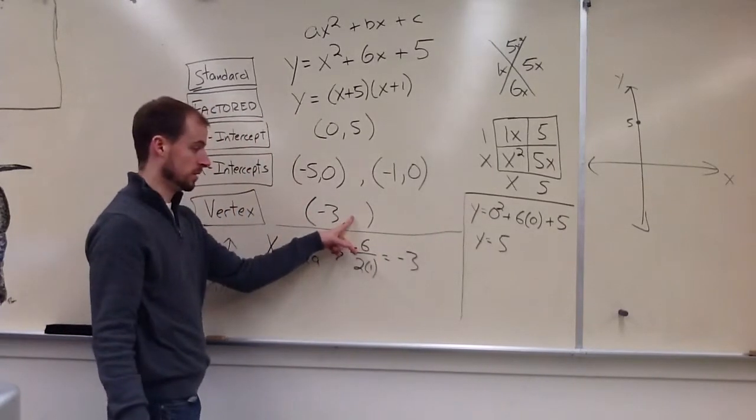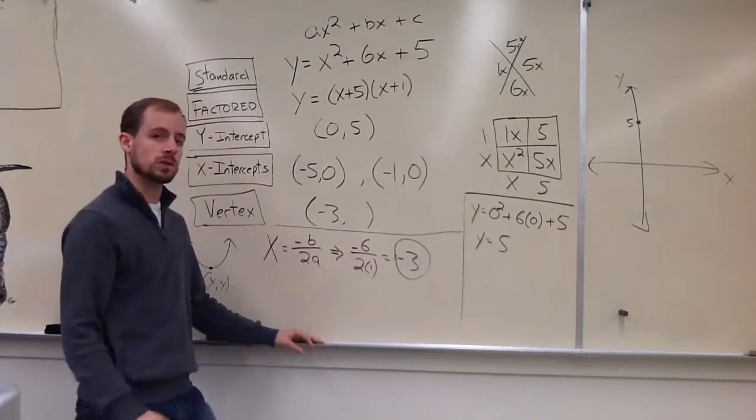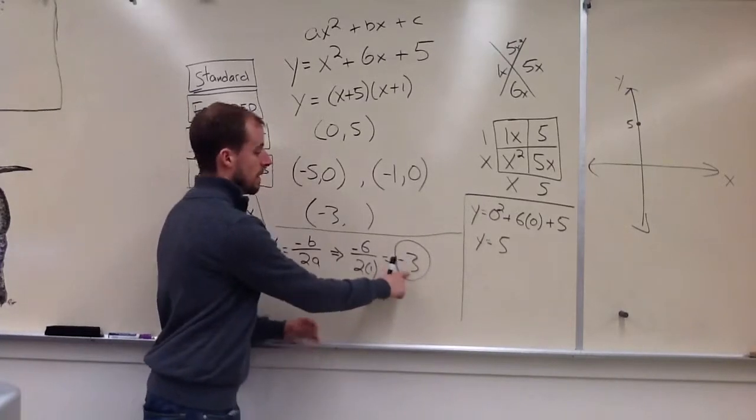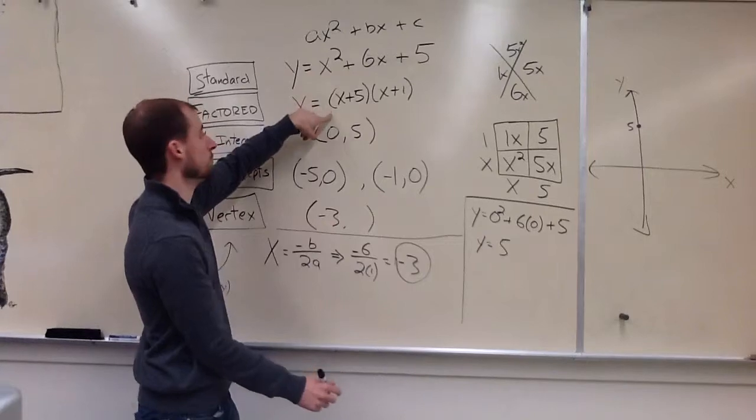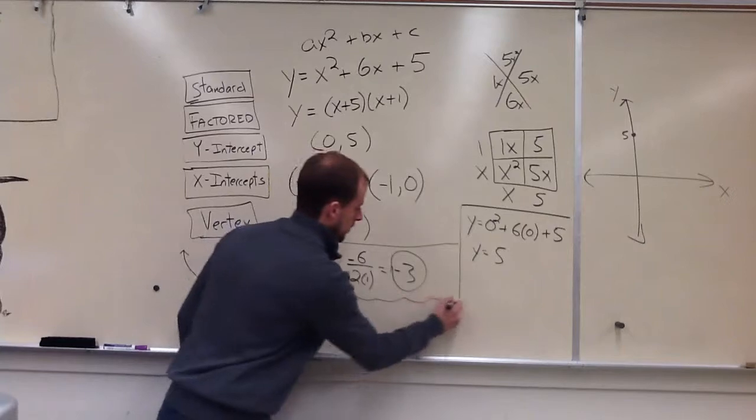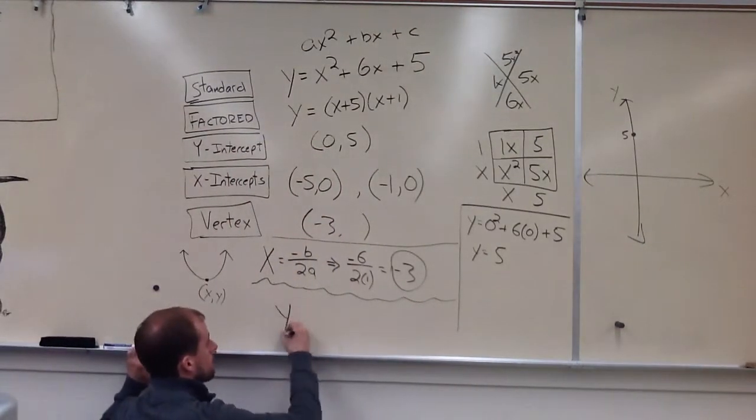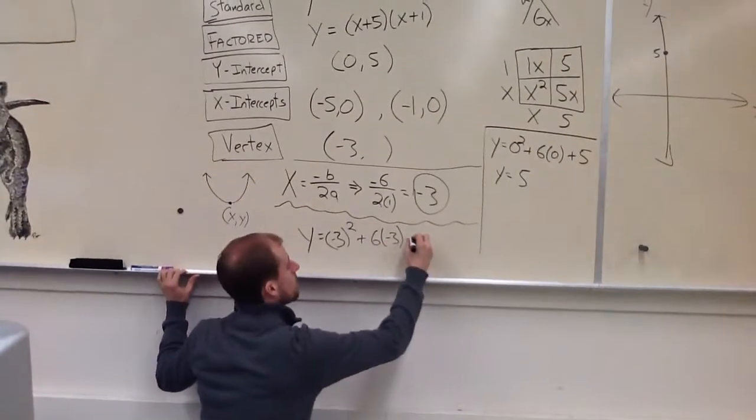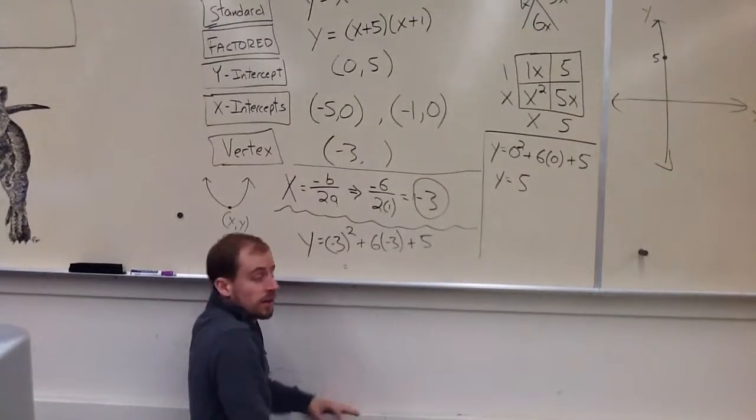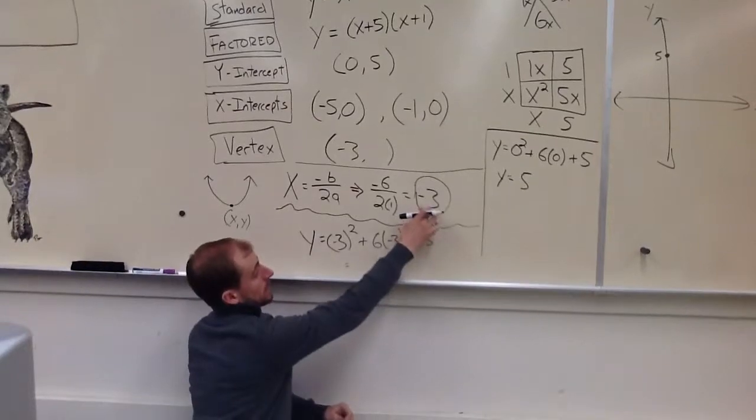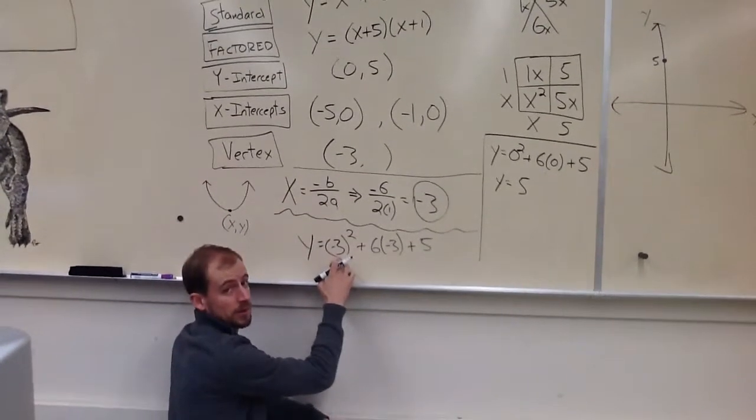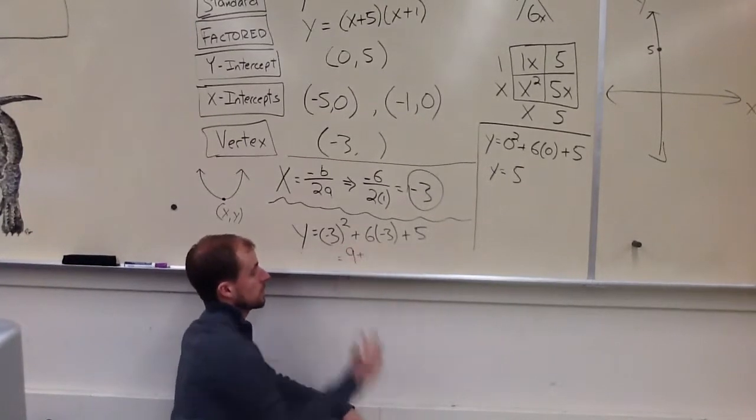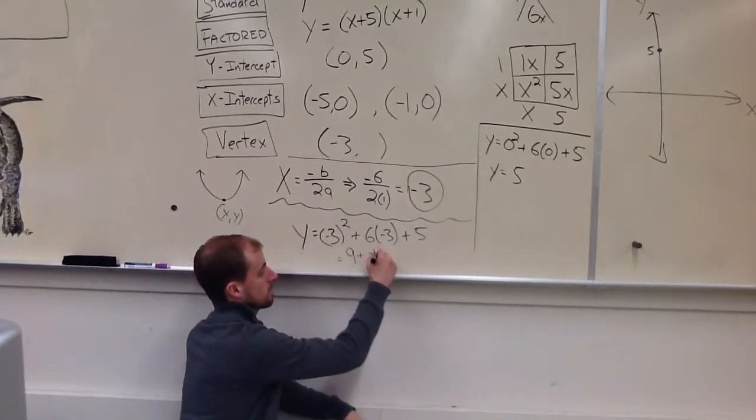I still need my y coordinate. So, think back to when we did systems of equations. When we did systems of equations, we solved for one variable. It was an x or a y. When we needed the other one, we plugged that answer back in. So, we're going to do the same thing here. I'm going to plug my x is negative 3 back into one of these originals. Standard form or factored form would work. And I'm going to do that down here. So, it'll look like this. Negative 3 squared plus 6 times negative 3 plus 5. So, I plugged in my x's negative 3 into my original. So, there used to be x's here. Now, there's negative 3's.